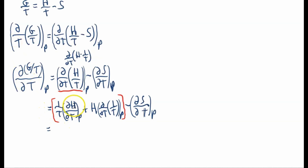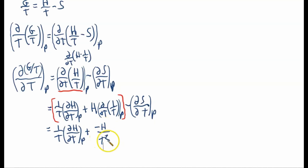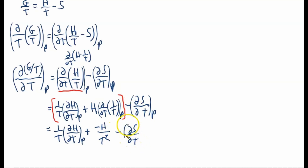We leave the term 1 over T times the partial derivative of enthalpy with respect to temperature at constant pressure. We can take the derivative of 1 over T — that's just negative 1 over T squared. So this whole term becomes negative H over T squared. And then minus the partial derivative of entropy with respect to temperature at constant pressure.